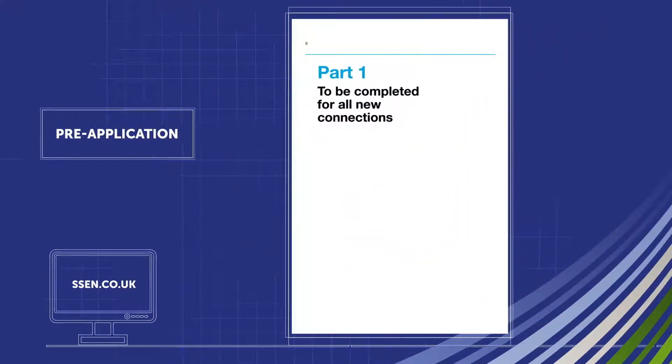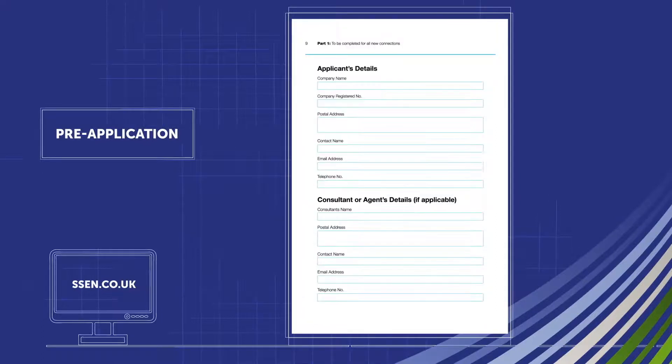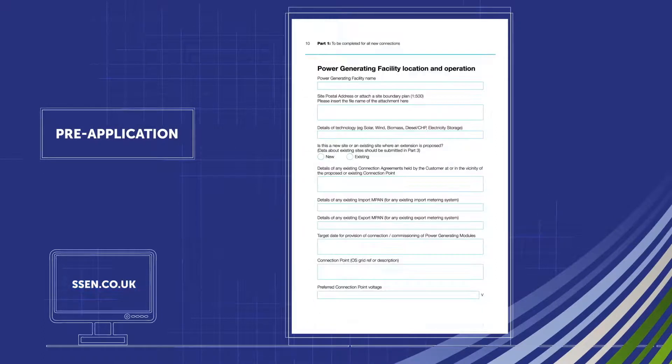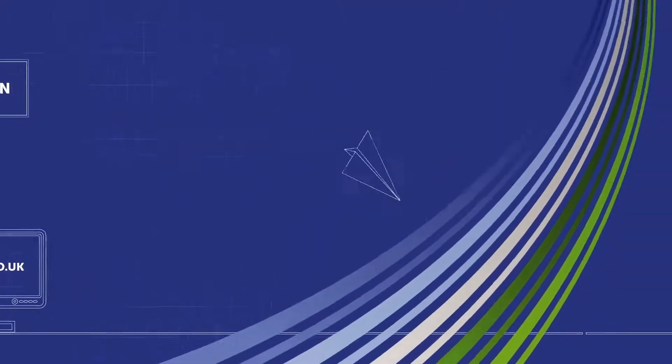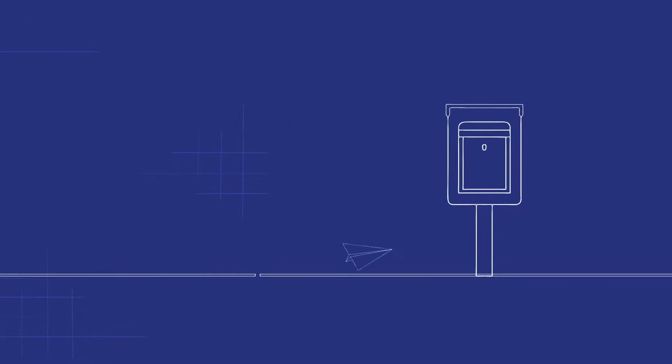To apply for a generation connection, please either visit the SSEN website and complete an online application, or complete an offline application and return by email or post.